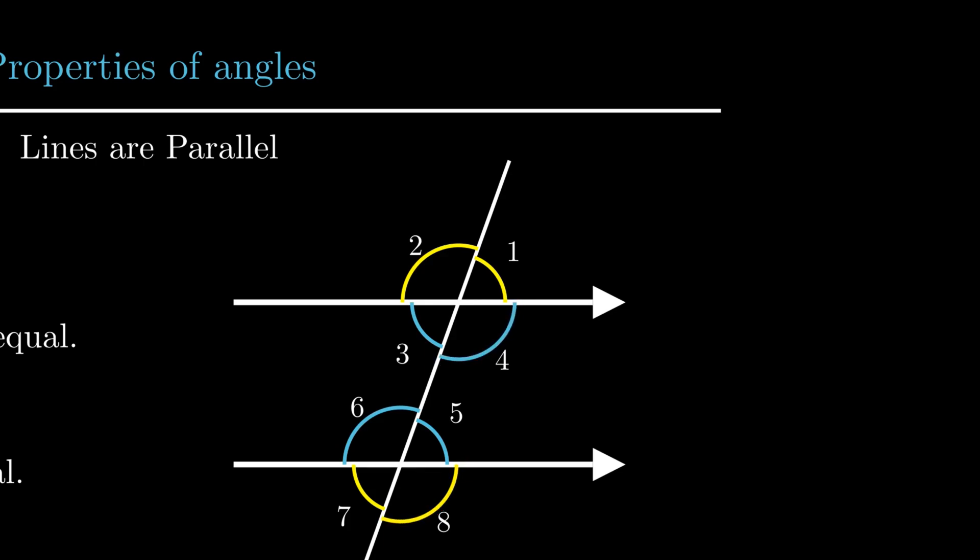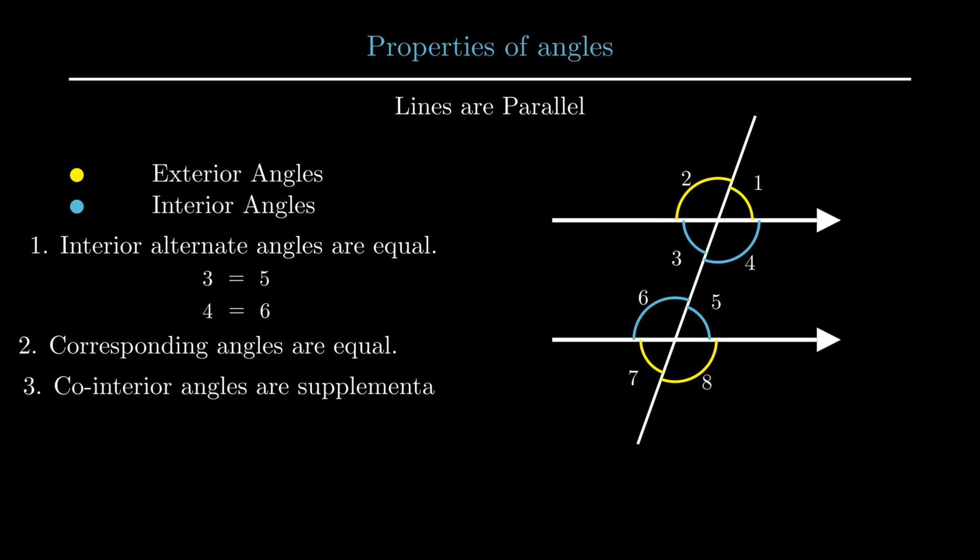Third property is the most important property and states that if lines are parallel, the co-interior angles are supplementary. The word co means same and interior means inside. So the sum of angles on the same side of transversal and between the parallel lines is 180 degrees. From the figure, angle 3 plus angle 6 equals 180 degrees or angle 4 plus angle 5 equals 180 degrees. This property is also called the allied angle property.